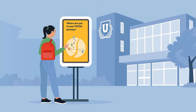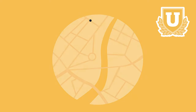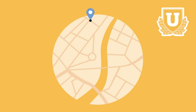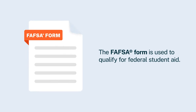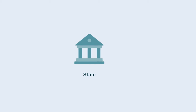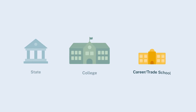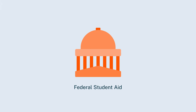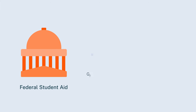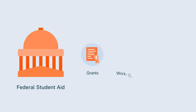The first stop in your financial aid journey is preparing to complete and submit your Free Application for Federal Student Aid, or FAFSA form. The FAFSA form is used to qualify for federal student aid. The information you provide on the form may also be used to apply for student aid from states, colleges, and career or trade schools. Federal Student Aid, an office of the U.S. Department of Education, is the largest source of student aid and includes grants, federal work-study funds, and federal student loans.